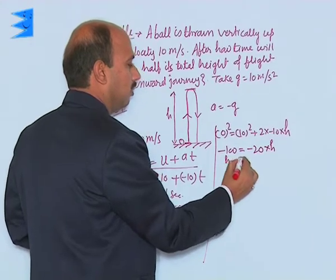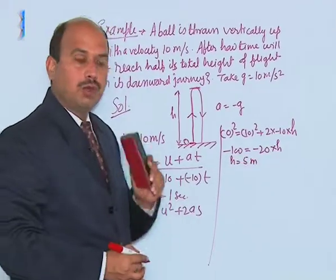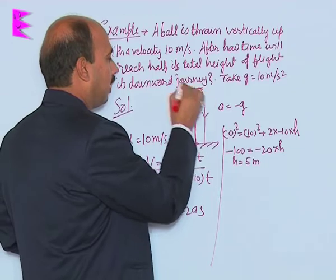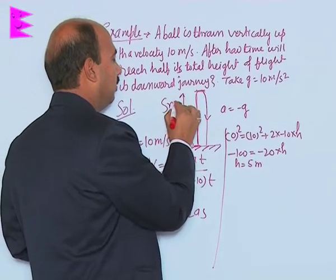You will be getting here minus 100 is equal to minus 20 into h. So h is equal to 5 meter, it means the body is travelling total height of 5 meter.